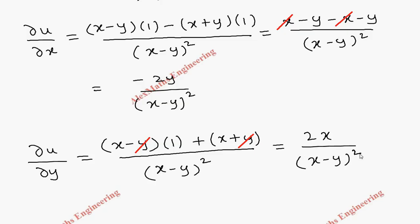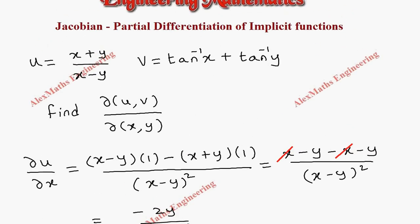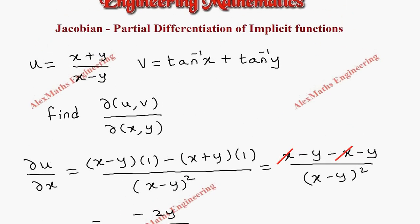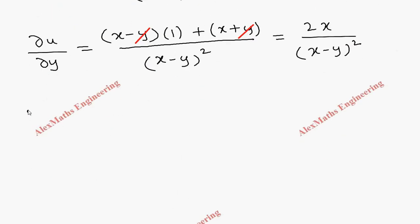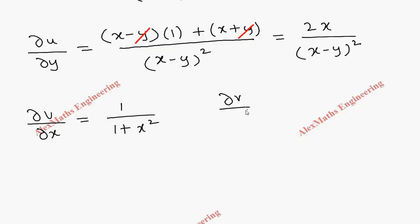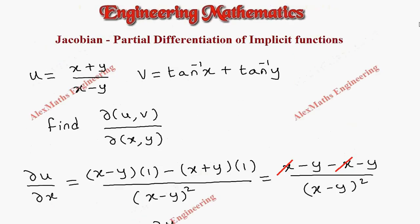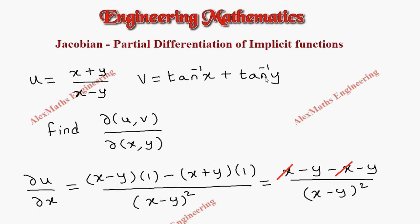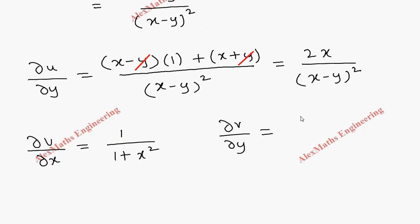Now for the second part, we need ∂v/∂x and ∂v/∂y. The derivative of tan inverse x is 1 by (1 plus x²), so ∂v/∂x equals 1 by (1 plus x²). When differentiating with respect to y, the first part (tan inverse x) gives 0, so ∂v/∂y equals 1 by (1 plus y²).